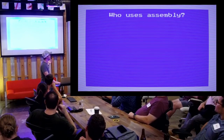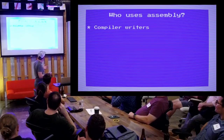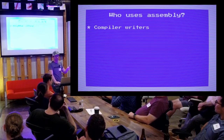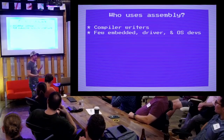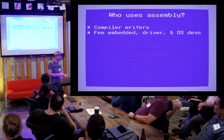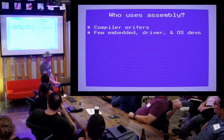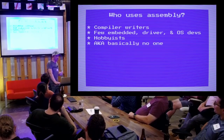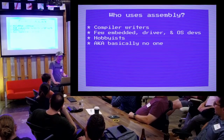So who uses this weird set of languages? In the modern age, some compiler writers might use assembly — probably not that many these days, but maybe for certain niche or specific functions. Similarly, embedded driver and operating system developers occasionally write some assembly, but more likely they're writing C or, these days, Rust. And then you have hobbyists, which probably makes up the majority of people who write assembly today. So in other words, basically no one. Very few people choose to write assembly, and even fewer are certainly doing it professionally.